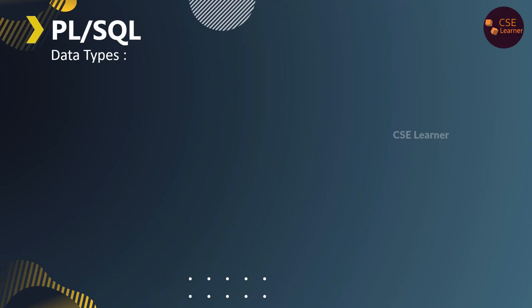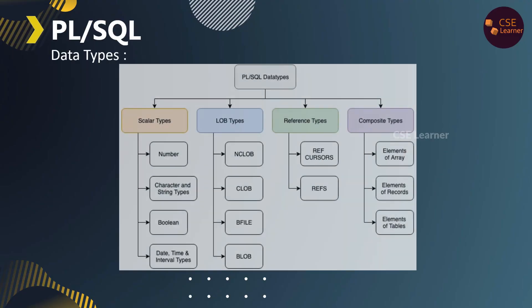In PL/SQL, there are 4 data types: number, character, boolean, and datetime. Under number types, there are: binary integer, binary float, number, decimal, numeric, float, int, integer, small int, and real.